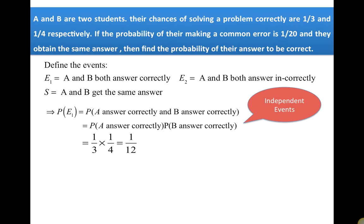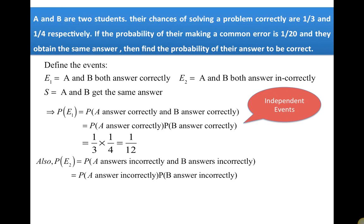The probability of E2 is the probability that A answers incorrectly and B answers incorrectly. These are also independent events, so P(E2) = P(A incorrect) × P(B incorrect) = (1 − 1/3) × (1 − 1/4), which simplifies to 2/3 × 3/4 = 1/2.